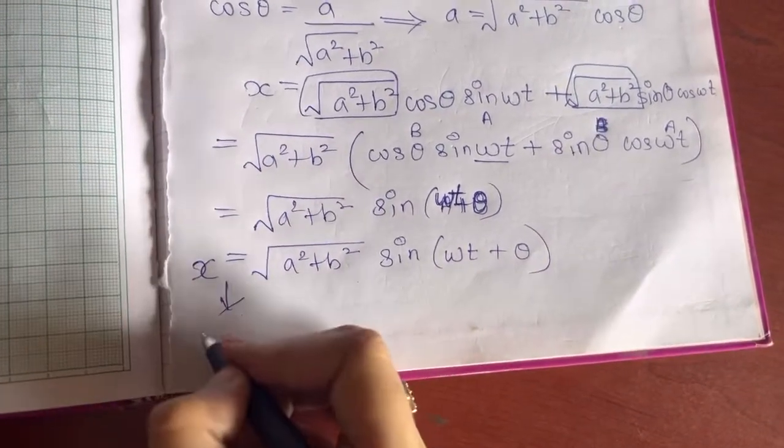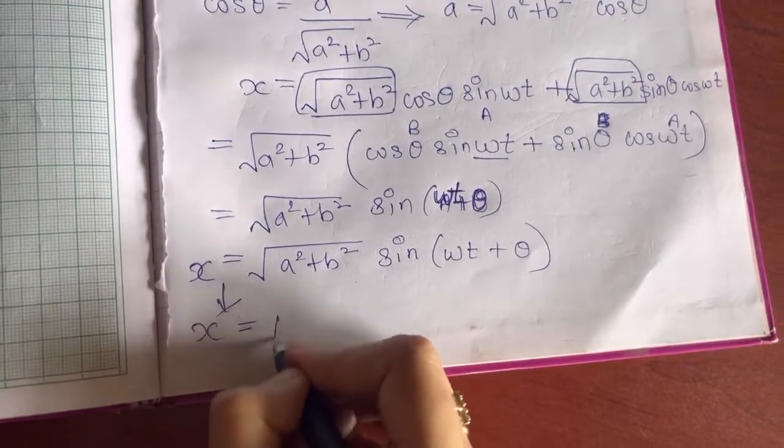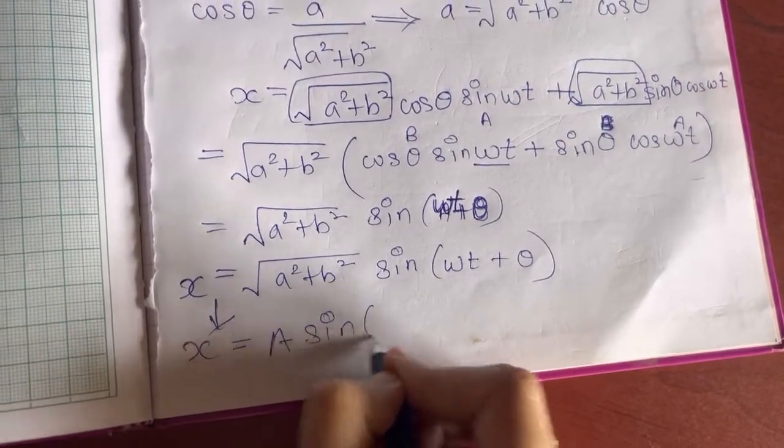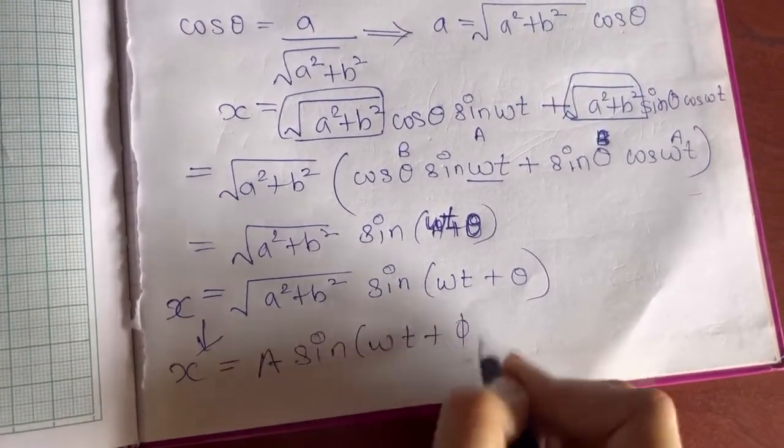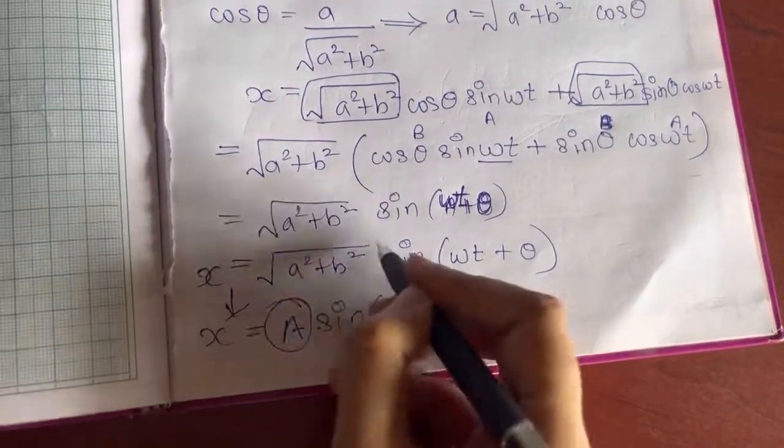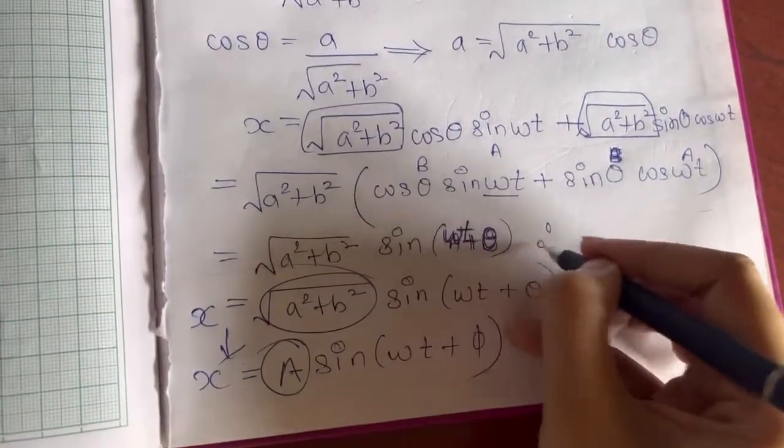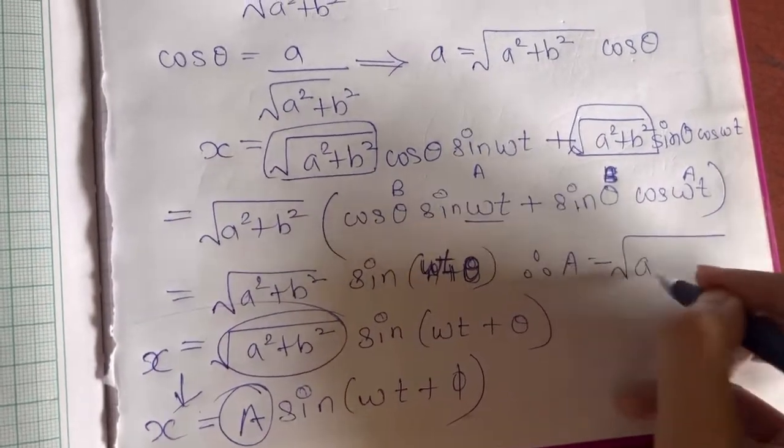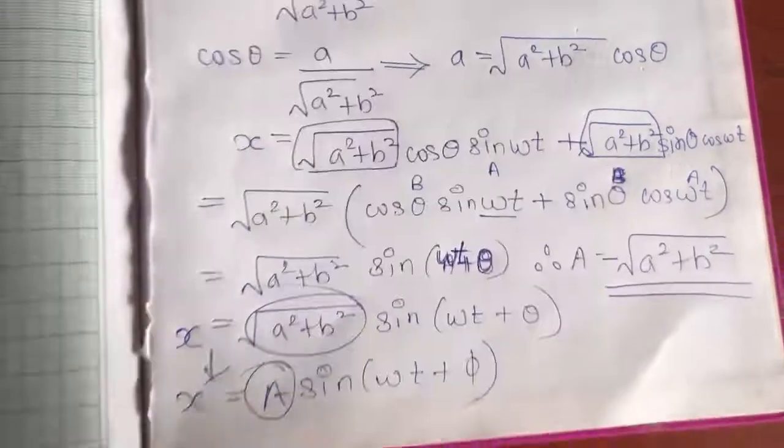Now, if I compare it with the displacement of simple harmonic motion, that is A sin(ωt + φ), at the place of amplitude I have this thing. This tells me that amplitude is equal to √(a² + b²).